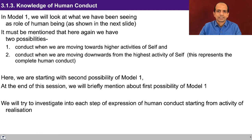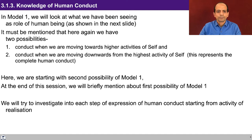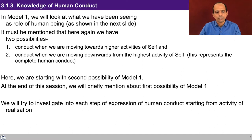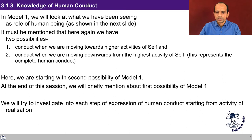We'll start by discussing the second part of model one — when the higher activities are guiding — and by the end of the lecture we'll also discuss the possibility when we are moving from lower activities to the higher activities. Conduct when we are moving towards higher activity of the self, and conduct when moving downwards from the higher activities of the self, represents complete human conduct. So we are starting with the second possibility of model one. We discussed about the role of human being in the entire existence in the previous lecture, and that is basically human conduct.